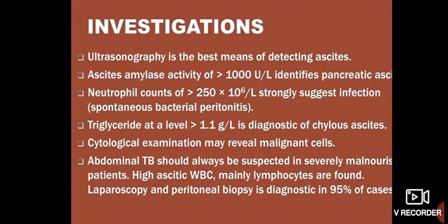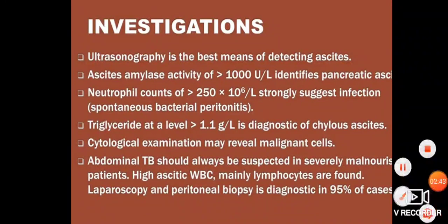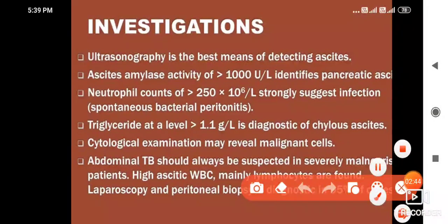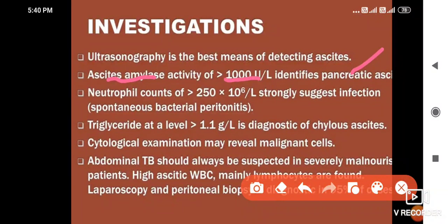How to investigate and diagnose ascites? Ultrasonography is the best means of detecting ascites. Ascitic amylase activity of more than 1000 units per liter identifies pancreatic ascites.